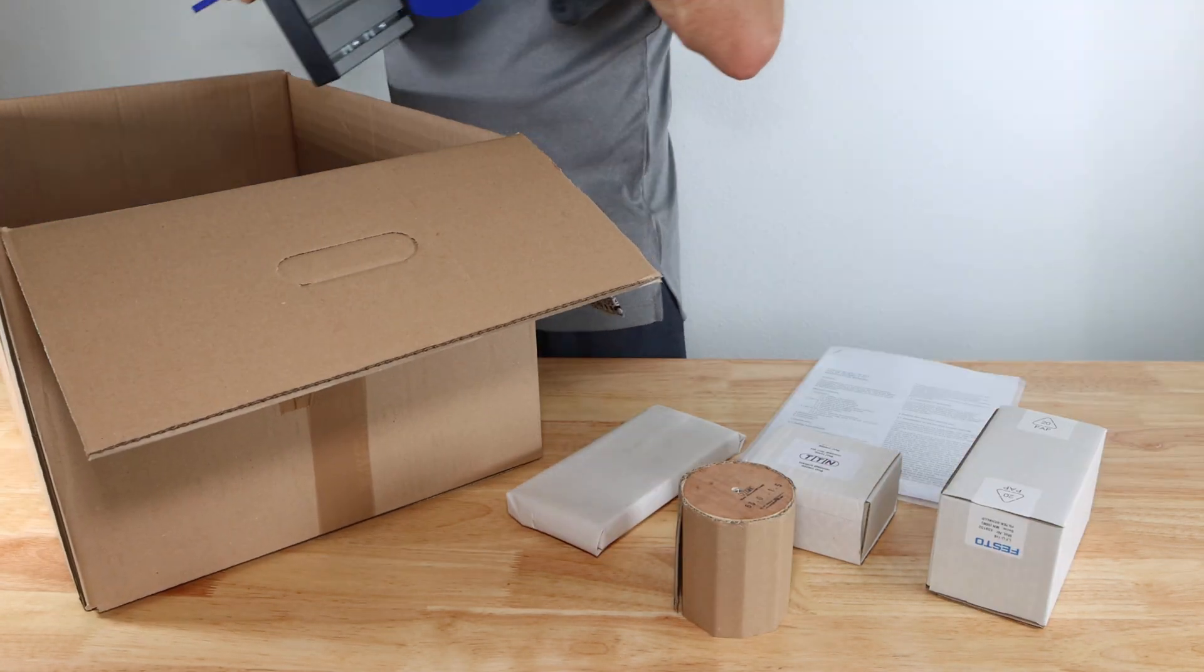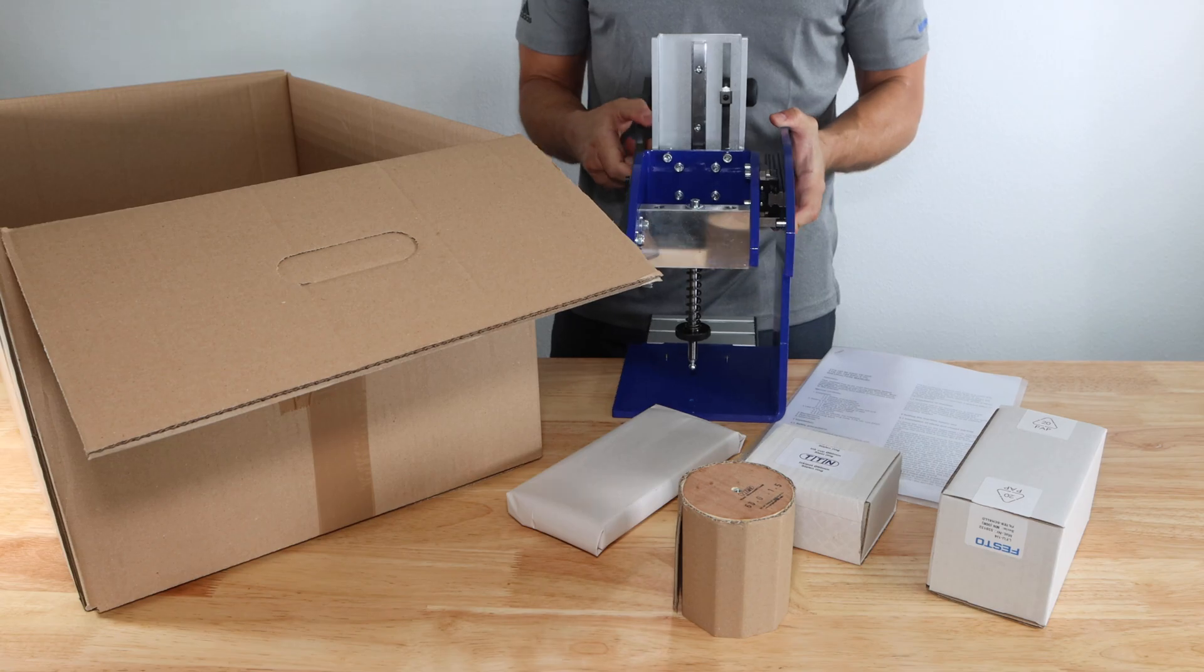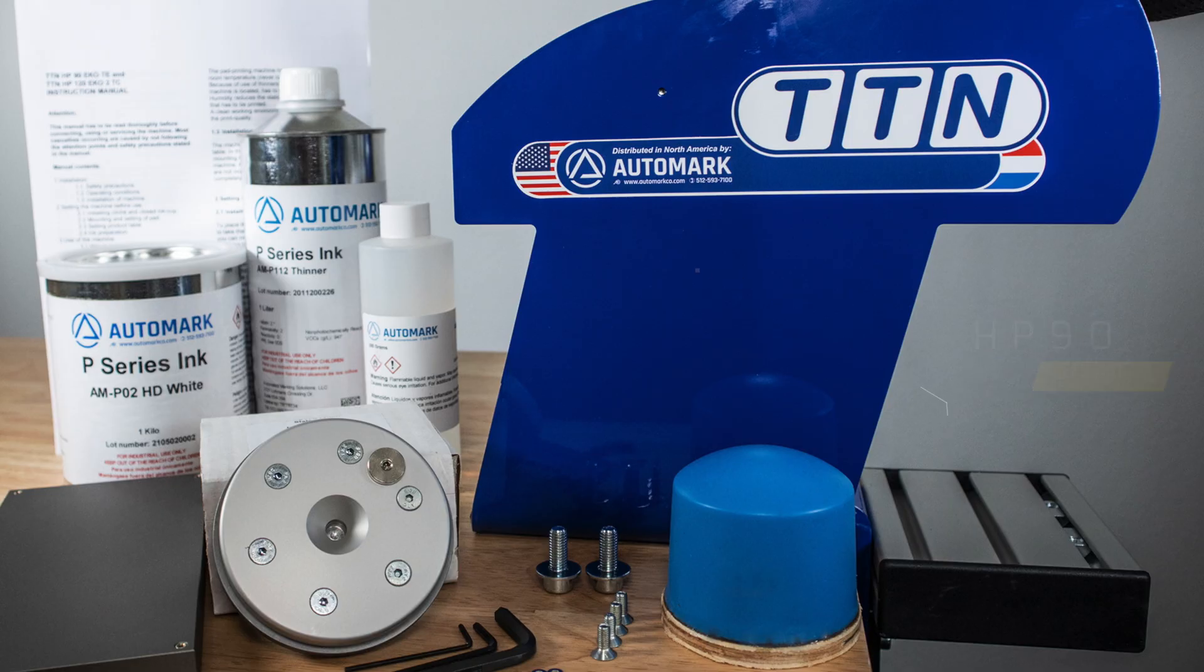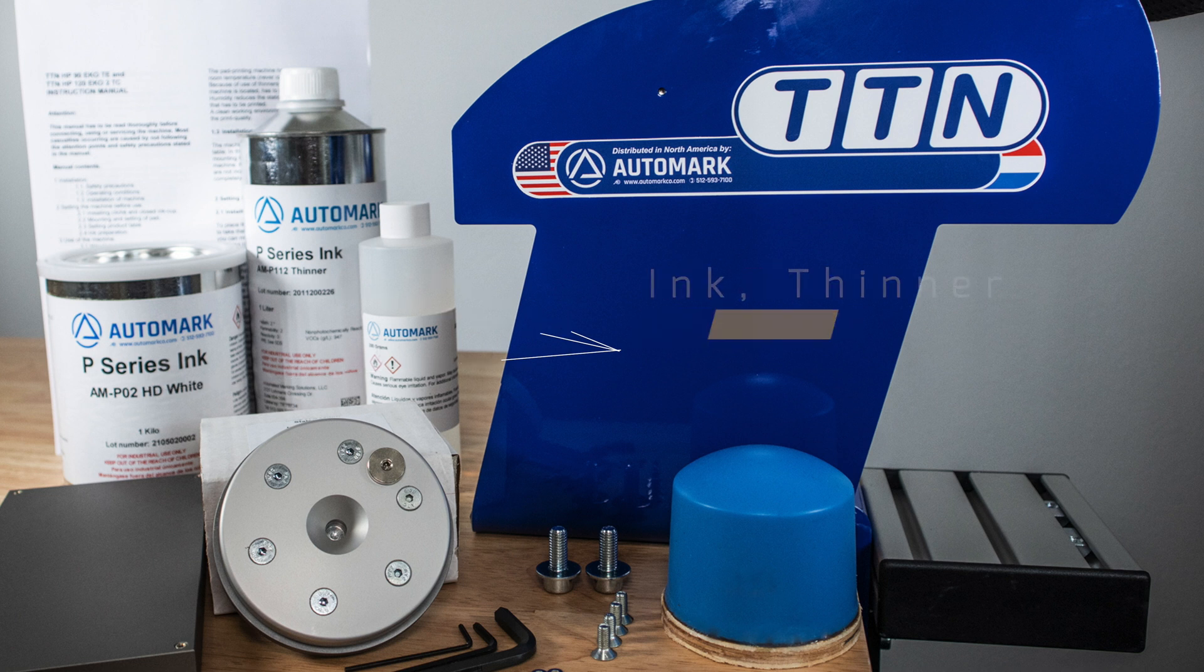The TTN HP90 pad printer comes with a machine and a moving XY table with fixture clips inside, base plate, pad, and ink cup. Ink, thinner, and hardener. Mounting hardware, tools, and the owner's manual.